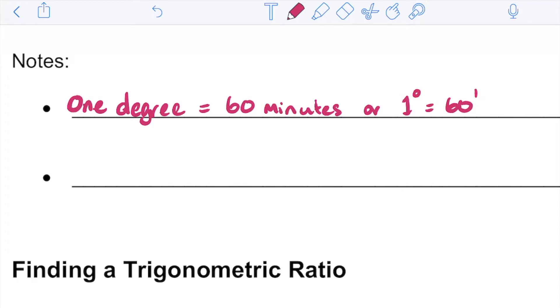We can also break down minutes into parts. One minute is equal to 60 seconds. This is just like how time works where a degree would be like an hour, you break down your hour into 60 minutes and then your minute into 60 seconds. Very similar in trigonometry.